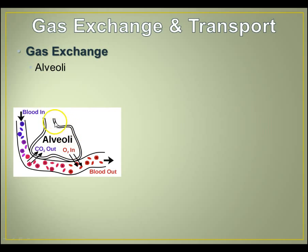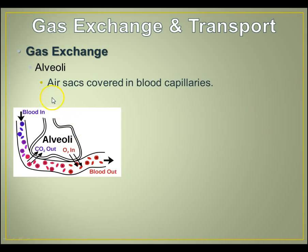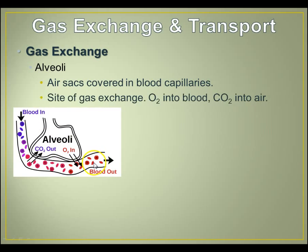These tiny air sacs are covered by capillaries, where the blood moves essentially single file — that's the only place gas exchange can occur. The alveoli expand and contract, and the blood vessels covering them diffuse carbon dioxide out when the alveoli contract, sending it out of the body. When the alveoli expand, they bring in oxygen and oxygenate the blood.